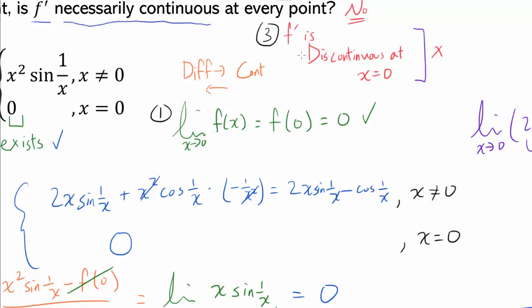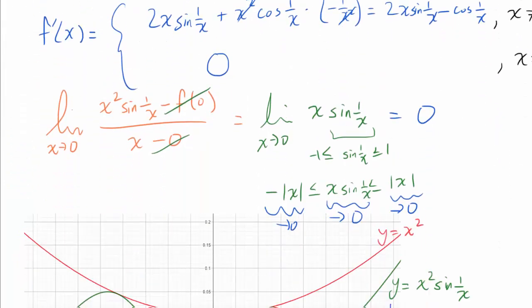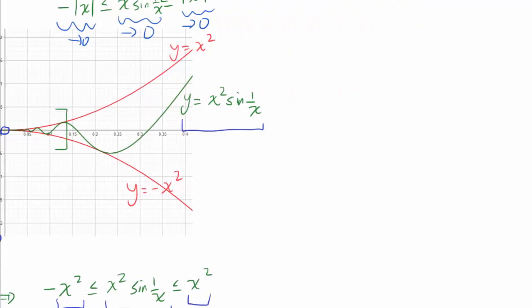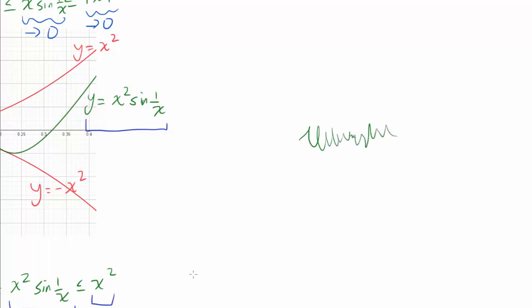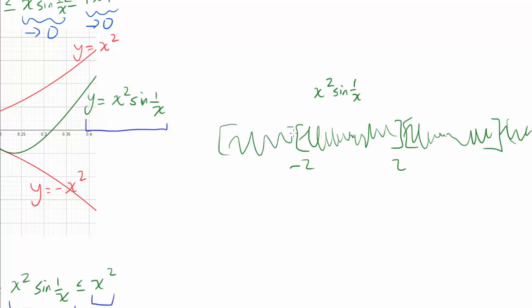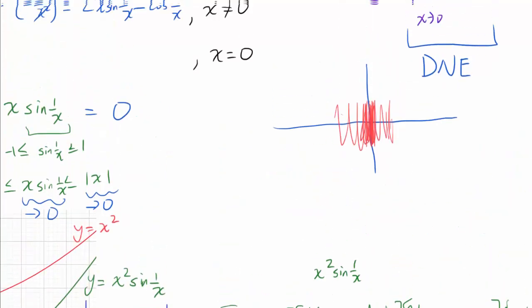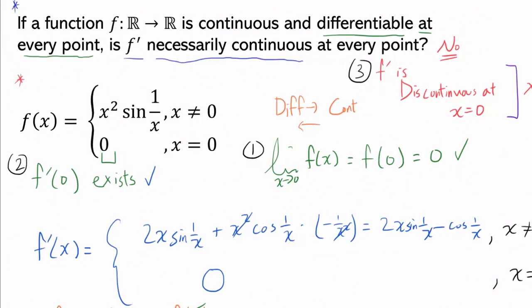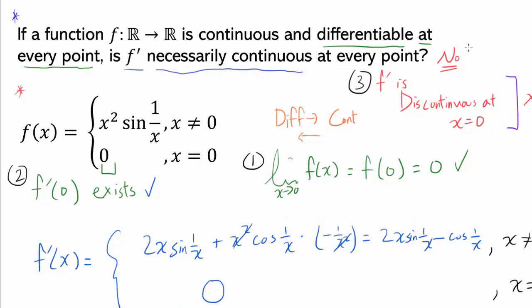One more interesting observation: we could copy this function repeatedly across the real line — taking x²·sin(1/x) bounded between say −2 and 2 and repeating it. This gives a function that is continuous and differentiable at every single point, but f' is not continuous at infinitely many points. So not only does f' not have to be continuous at one point, it doesn't have to be continuous at infinitely many points — which is simply fascinating. The answer to the original question is no.